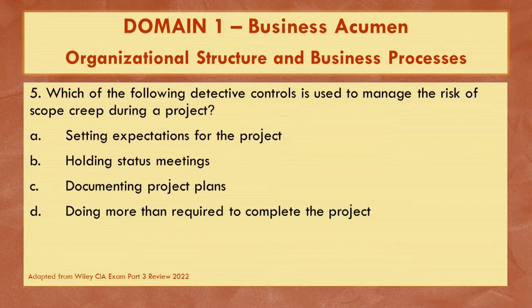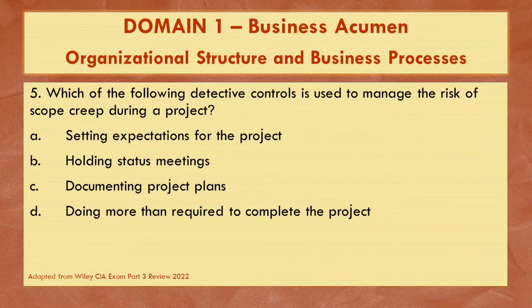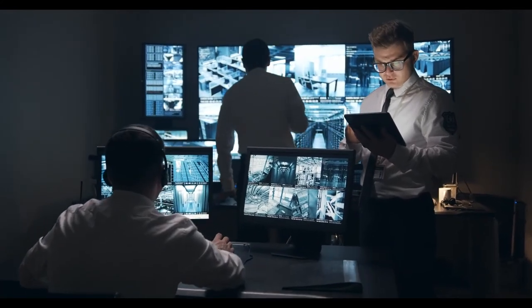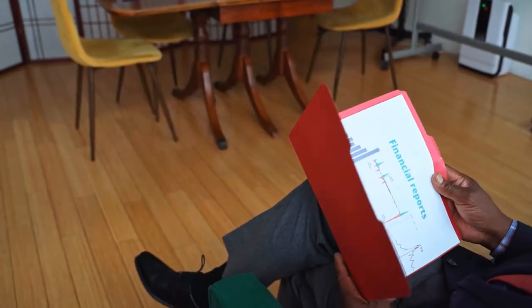Question five. Which of the following detective controls is used to manage the risk of scope creep during a project? A, setting expectations for the project; B, holding status meetings; C, documenting project plans; or D, doing more than required to complete the project? The key word is detective. Detective controls are internal controls that detect or uncover issues, problems, and deviations from standard processes after they have occurred.